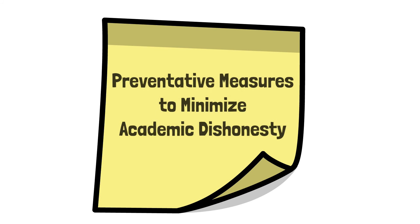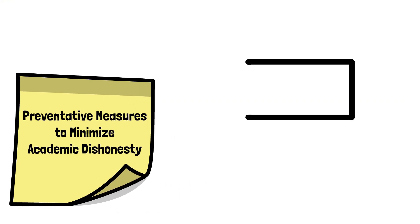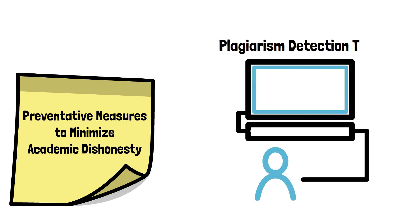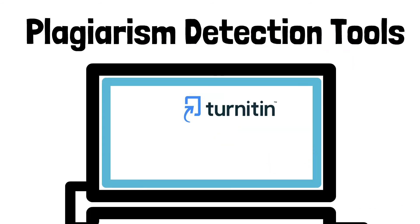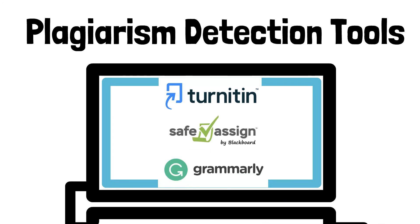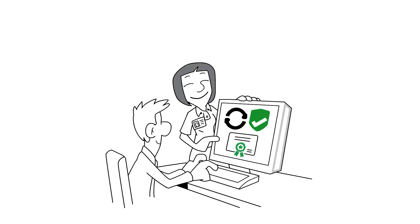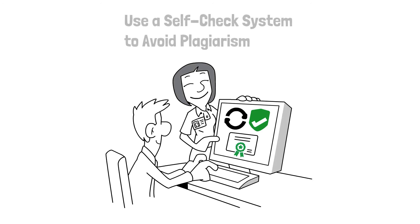Preventive measures can be taken to minimize incidences of academic dishonesty related to written assignments, such as requiring students to utilize plagiarism detection tools. Some plagiarism detection tools are Turnitin, SafeAssign, and Grammarly. Additionally, encouraging students to proactively use a freely available self-check system to determine instances of unintentional plagiarism can be beneficial.